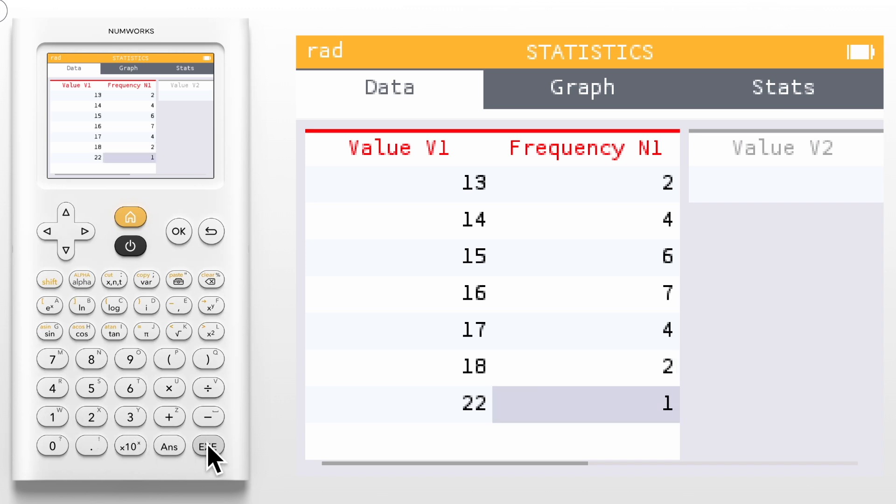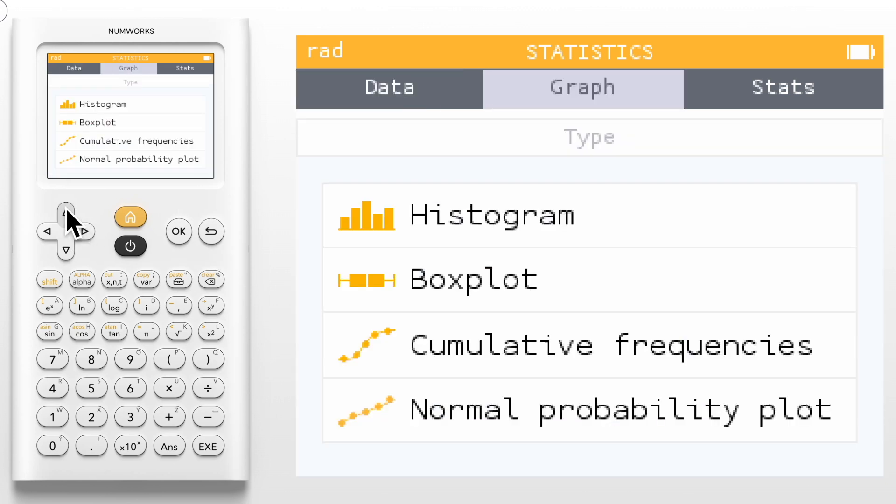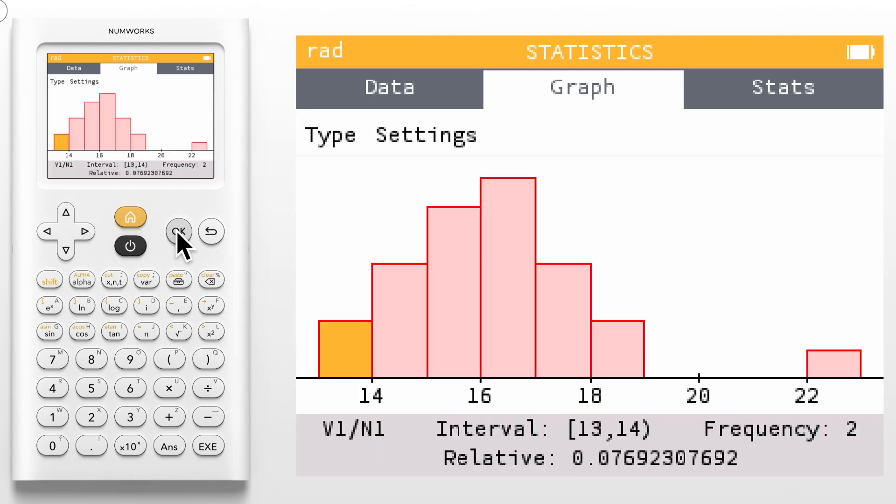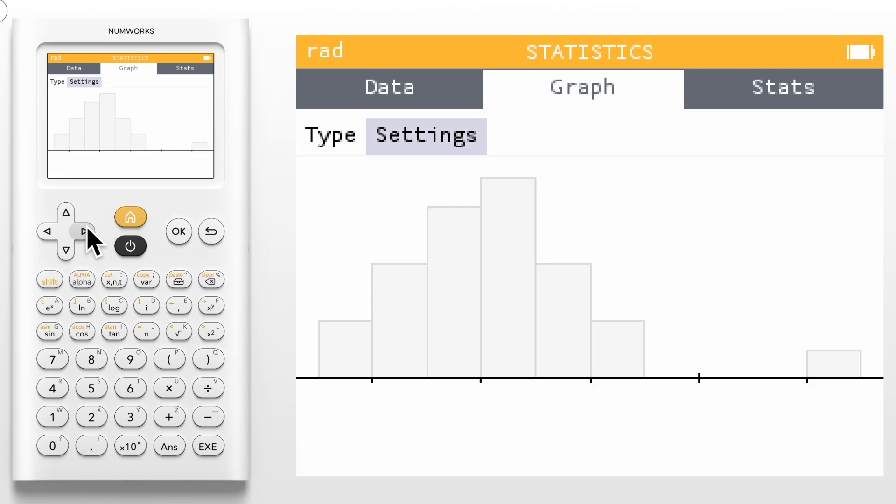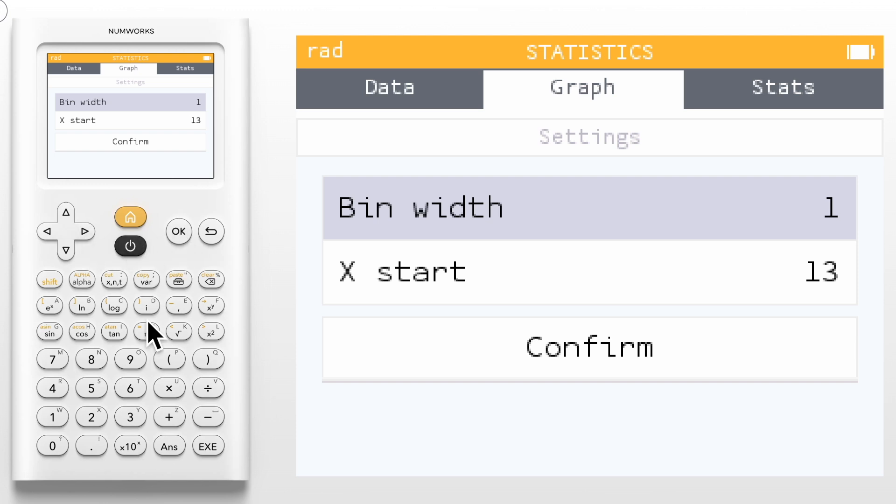We can view graphical displays of our data using the graph tab. We can navigate up to the tab using the up arrow, but the back key will also jump us to the tabs which can be really helpful for large data sets. Here we can look at a histogram, box plot, cumulative frequency plot, or normal probability plot. Let's look at the histogram. Notice the frequency and relative frequency at the bottom of the screen. Using the left and right arrows we can move into different bins. We can use the settings to change the bin size and the start value. Let's use a bin width of 2.